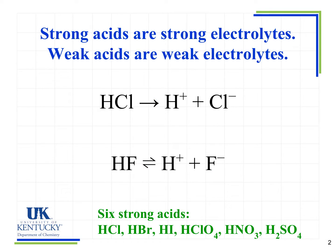How do you know the difference between strong acids and weak acids? Well, there are only six strong acids: HCl, HBr, HI, perchloric acid HClO4, HNO3, and H2SO4. If you know these six that are strong, then any other acid is going to be weak. Notice that our acids all start with a hydrogen, so that's always a pretty good clue that we're dealing with an acid.